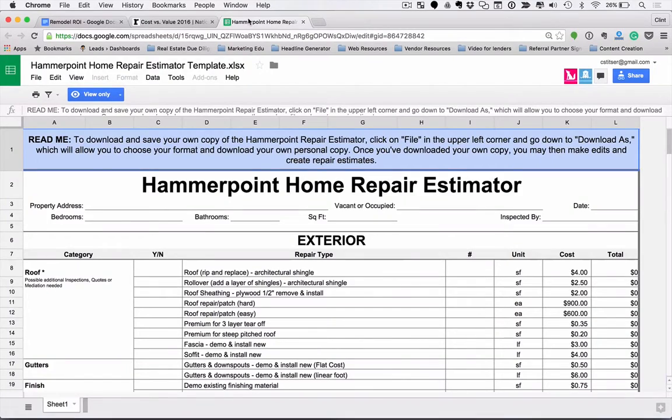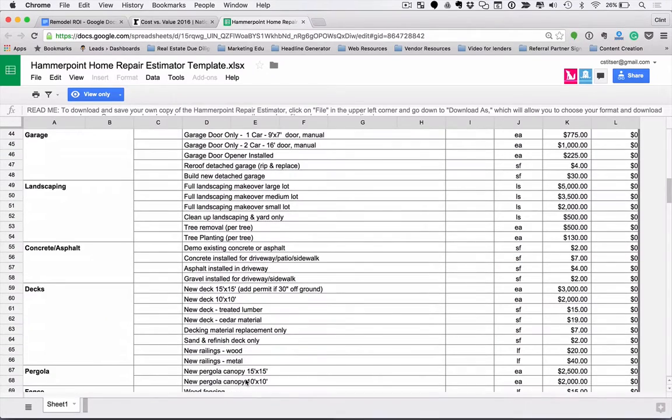The other resource, which again, both these links are going to be below this video somewhere, whether we're on YouTube or you're on Reno Home Journal, we'll provide them for you. The other resource on this Google spreadsheet was a great tool to give an average idea of what some things might cost if you were going to do work on your house.